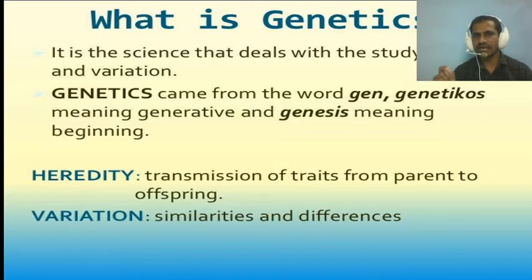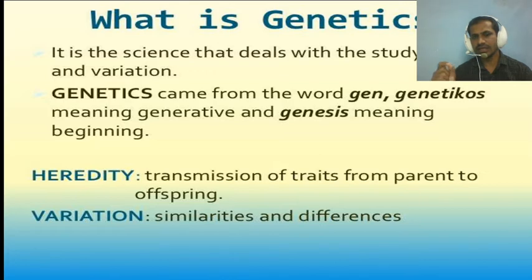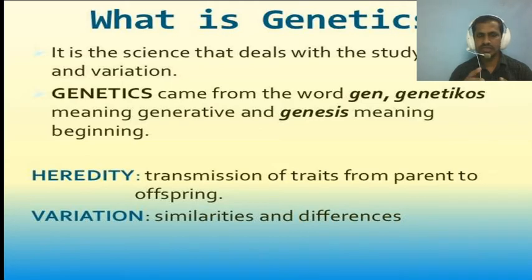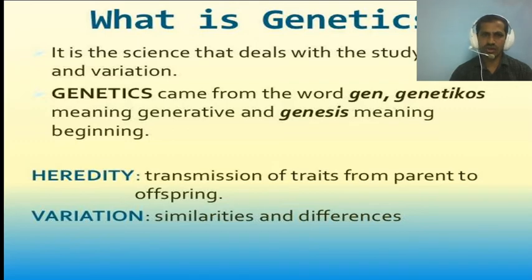Genetics involves two concepts: hereditary and variation. Hereditary is the transmission of characters or traits from parent to offspring. Variation refers to the similarities and differences passed on from parent to offspring. Combined together, the transfer from parent to offspring is what is called genetics.